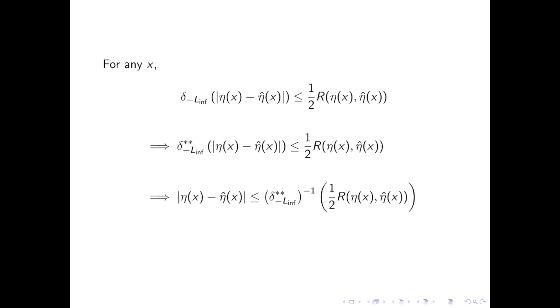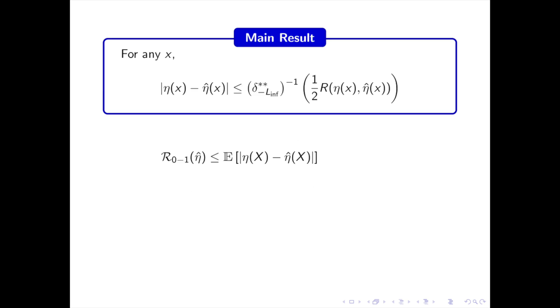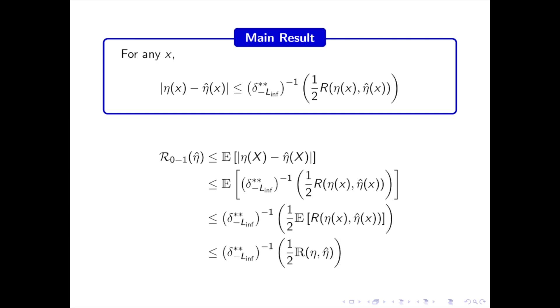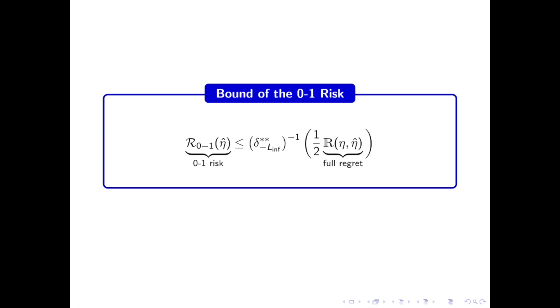Then we compose by its inverse and this gives the main result of a paper, which is a bound on the absolute value of eta minus eta hat. Now, remember that we can bound the 0-1 risk by the bound on the absolute value of eta minus eta hat. Then, using the main result of a paper, we can replace eta minus eta hat by the inverse of a double convex conjugate of the modulus of convexity. And since the double convex conjugate is convex, we can use the variant of Jensen's inequality mentioned in the introduction. And finally, we obtain an upper bound on the 0-1 risk given as a function of the full regret of eta hat.